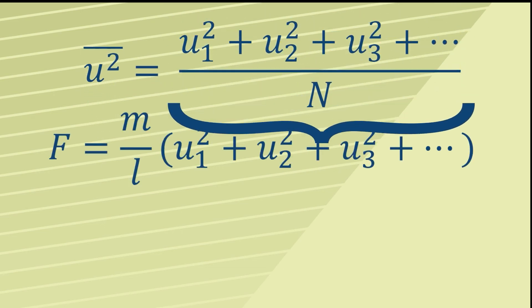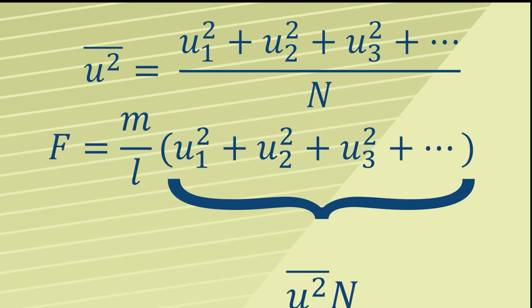Now we can see that if we take the mean square speed and multiply it by n, then that is going to be equal to the squares of all the individual speeds added up, which was the difficult bit inside the bracket.